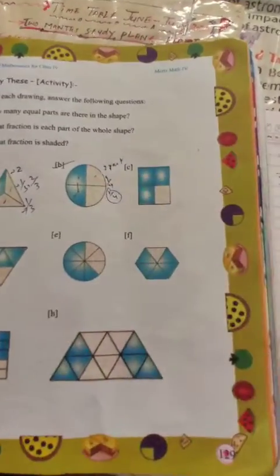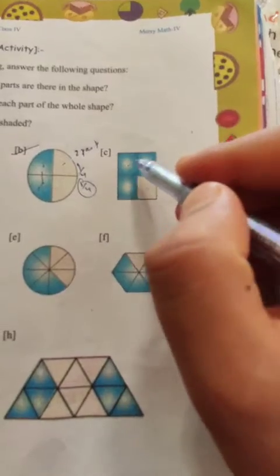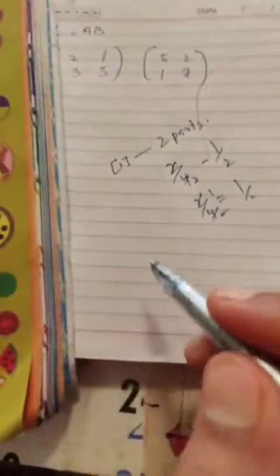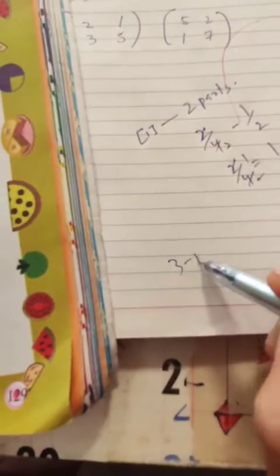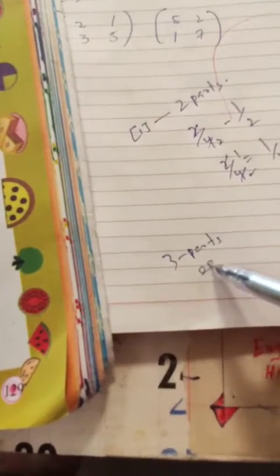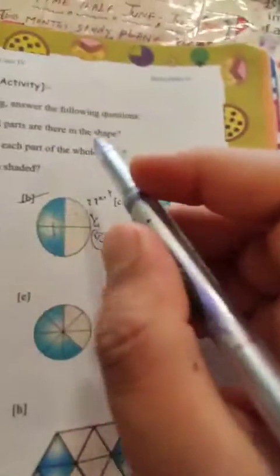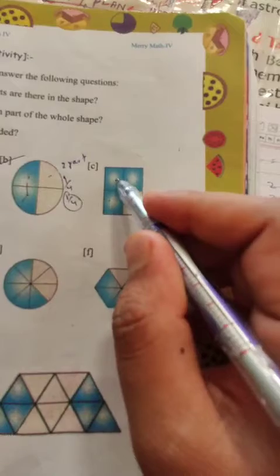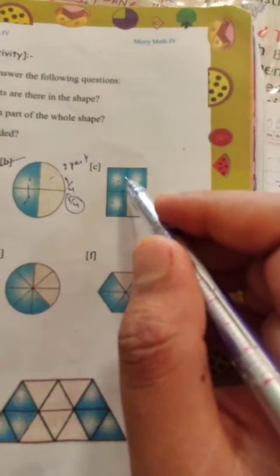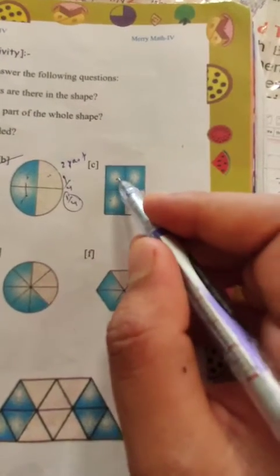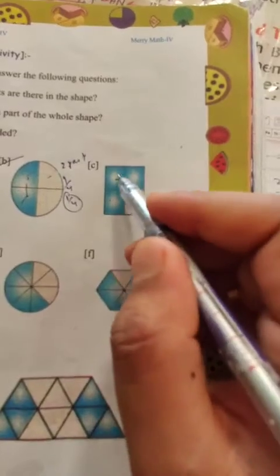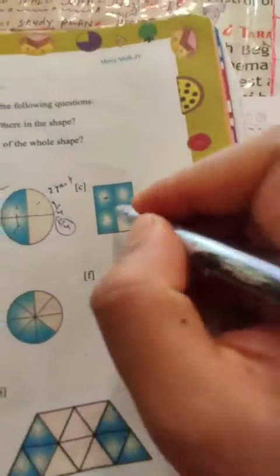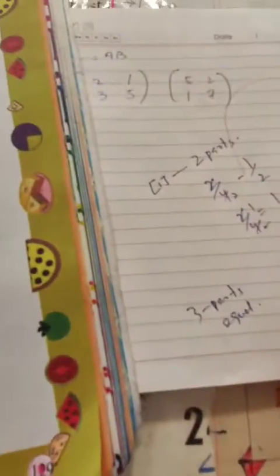Part C: Three equal parts. What fraction is each part of the whole? Each part is 3 by 4. Now color in 3 by 4, and color the 1 by 4 section.